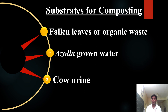Substrates used for composting: the first substrate is fallen leaves or organic waste. The second substrate is Azolla growth water. Azolla growth water contains some nitrogen content. Cow urine also contains nitrogen, potassium, and phosphorus.